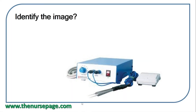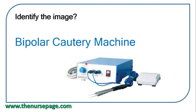First question: identify the image. This is a bipolar cautery machine — a bipolar cautery tip operated by a foot pedal. In contrast, the monopolar cautery tip is handled by hand using a finger switch. So monopolar is handled with the hand, but bipolar is used with the foot pedal. Correct answer: bipolar cautery machine.